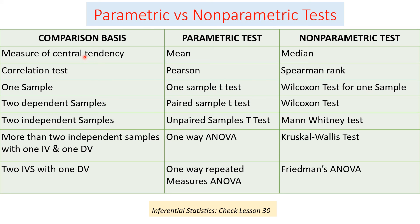Remember that when using parametric tests, you must check all the assumptions listed previously. For more than two independent samples with one independent variable and one dependent variable, one-way ANOVA is used parametrically, and the Kruskal-Wallis test is the non-parametric counterpart. For two independent variables with one dependent variable, one-way repeated measures ANOVA is used parametrically, and Friedman ANOVA is used non-parametrically. To choose, always check the assumptions first.